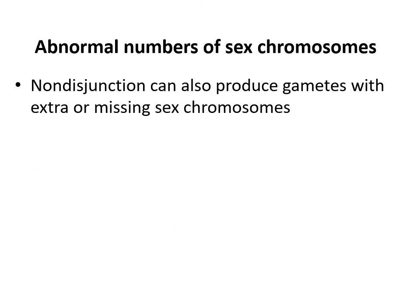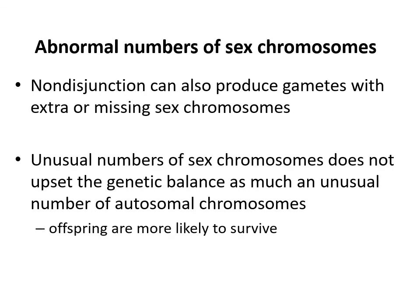Regarding abnormal numbers of sex chromosomes: this non-disjunction event particularly happens with the X or Y chromosome, producing gametes with extra or missing X or Y chromosomes. This unusual number of chromosomes does not upset the genetic balance as much, as there are not as many important genes on the X and specifically the Y chromosome as with some other chromosomes. So offspring are much more likely to survive this non-disjunction event.